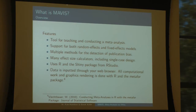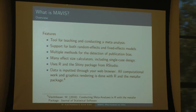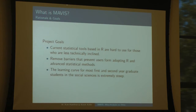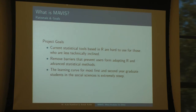Some of the features of Mavis: it's mostly designed to work as a pedagogical tool, so teaching people how to run a meta-analysis. It's all done in a web browser. There are multiple ways to detect publication bias, including Egger's regression and the Viechtbauer weight function model. One of the goals is to help lower the learning curve for people who are first learning how to do a meta-analysis. A lot of times, people who get started learning these methods are first or second year graduate students and they haven't actually been exposed to R yet.